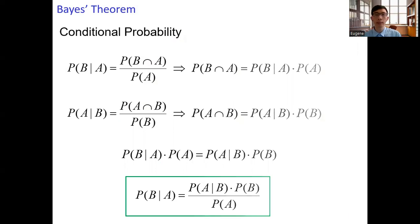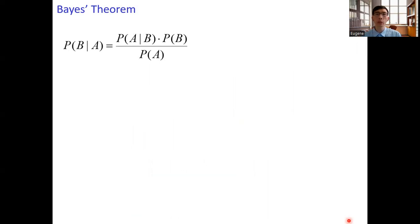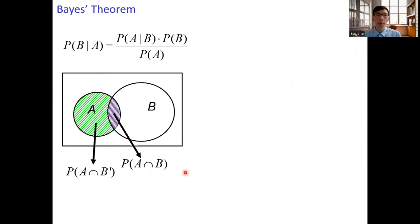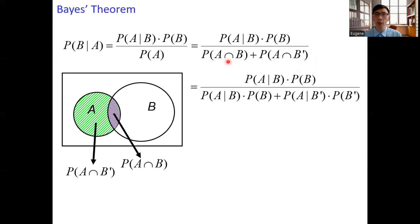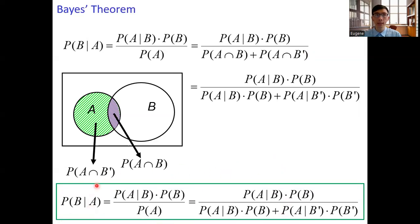Sometimes we may not know directly the probability of A. Instead, we know the conditional probability. So the probability of A can be expressed as the sum of the probability of the intersection of A and B prime and the probability of the intersection of A and B. We can rewrite the probability of A using the law of total probability, and then using the conditional probability formula, we can express the probability of the intersection of A and B as the probability of A given B times the probability of B. So at the bottom of this line, we get the Bayes' formula.